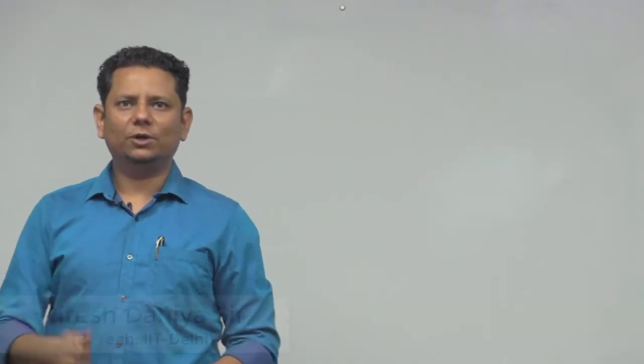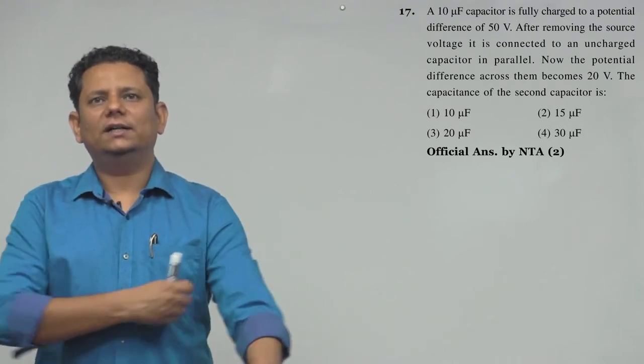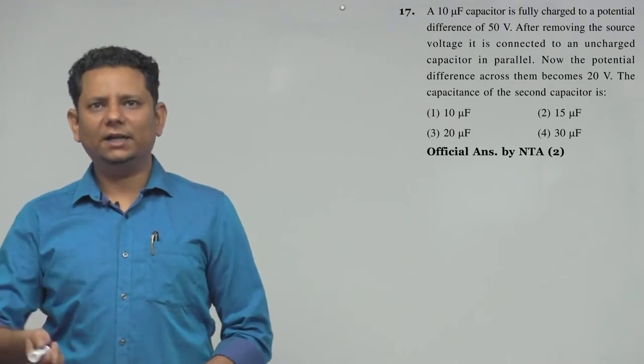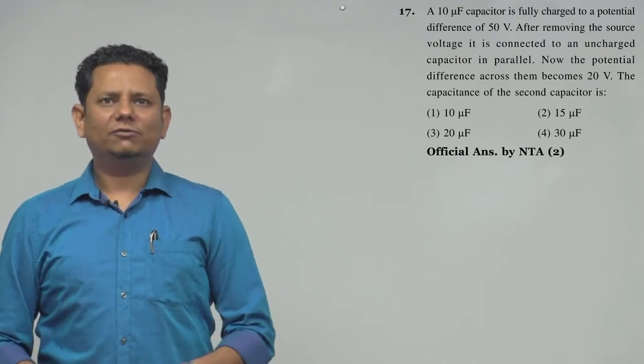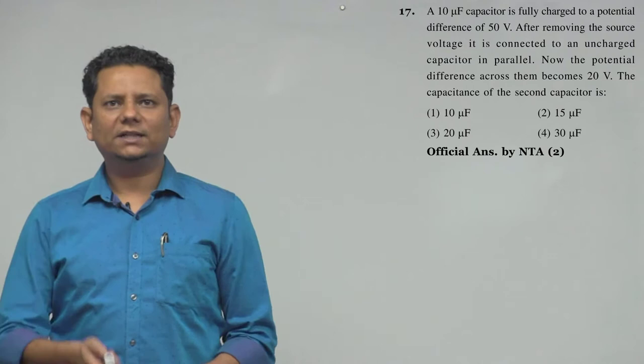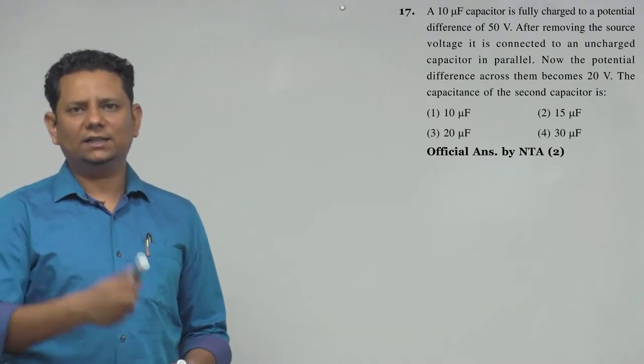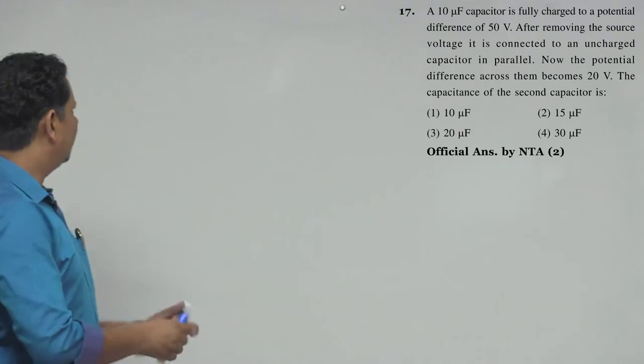Next question: A 10 microfarad capacitor is fully charged to a potential difference of 50 volts. After removing the source voltage, it is connected to an uncharged capacitor in parallel. Now the potential difference across them becomes 20 volts. The capacitance of the second capacitor is - four options: 10, 15, 20, 30.